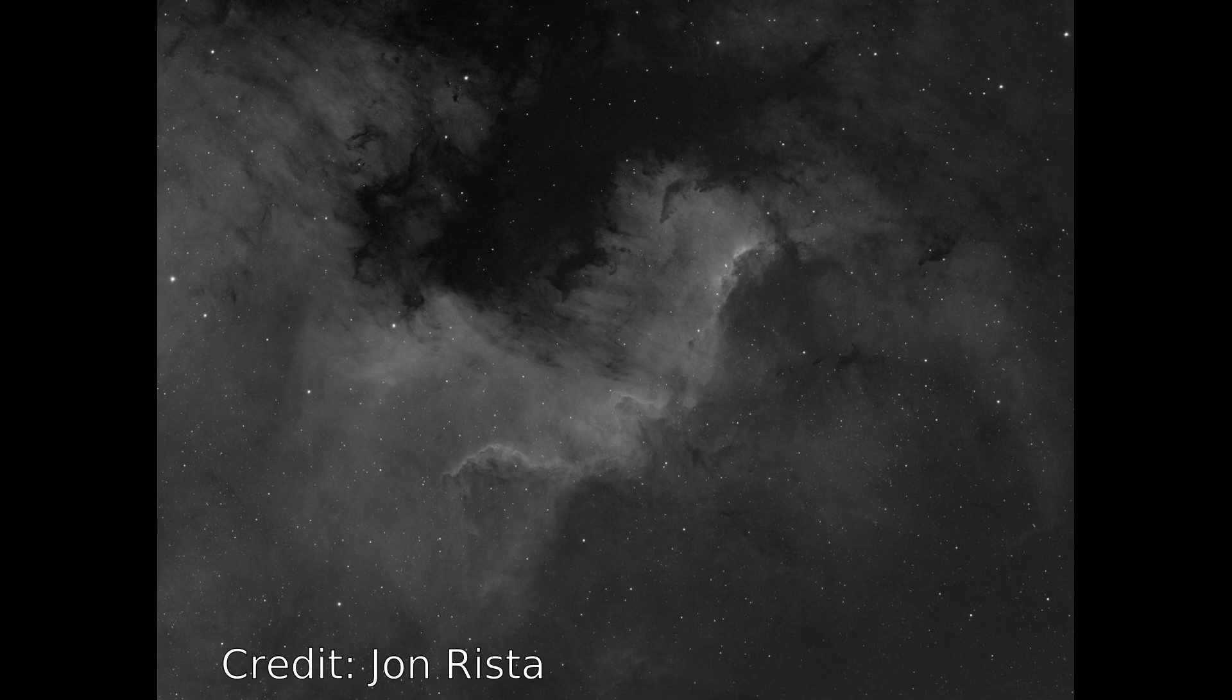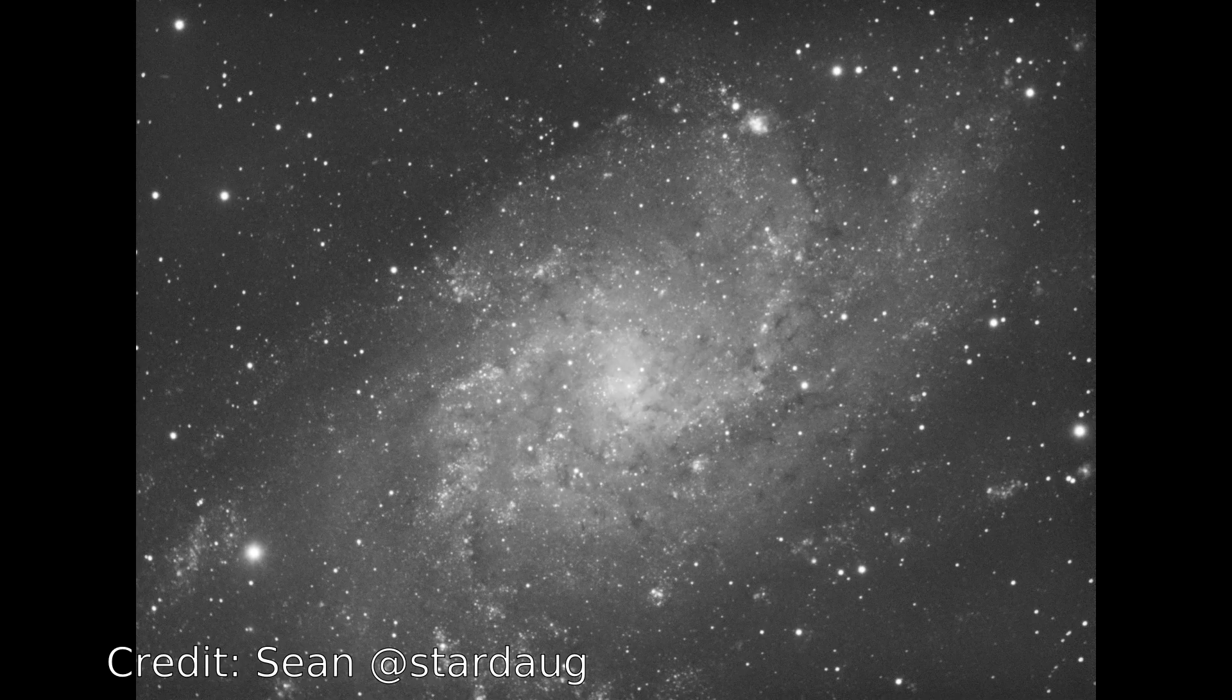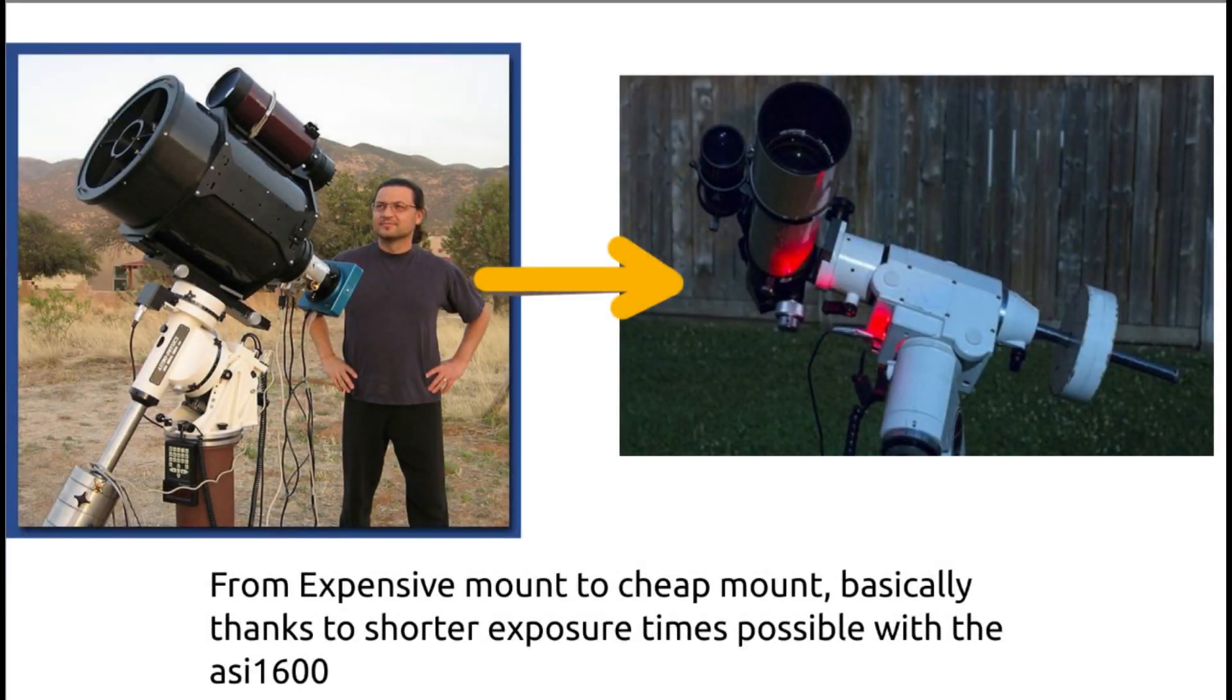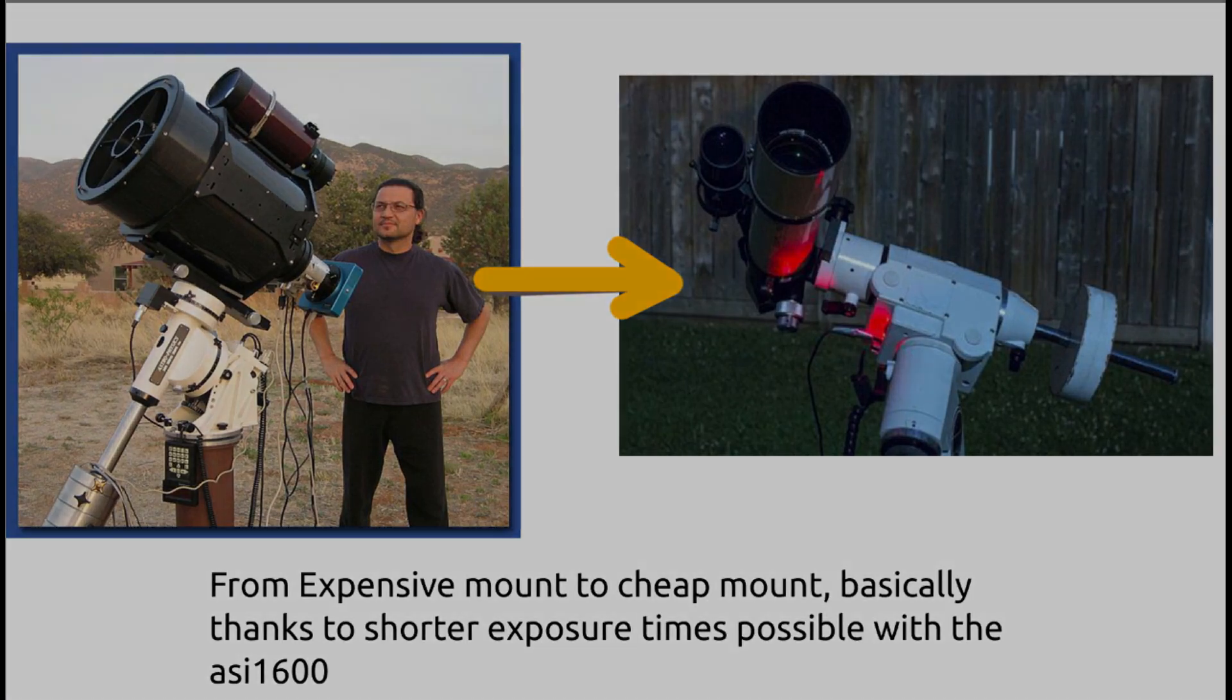One minute exposures being all you needed, producing incredible low noise images thanks to the incredibly high efficiency of the camera sensor. This is where a paradigm shift occurred in astrophotography, in my opinion, where it suddenly became possible to take incredible photos with less than ideal equipment, utilizing heaps and heaps of short exposures, such as one minute or even 30 seconds.